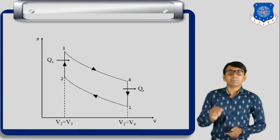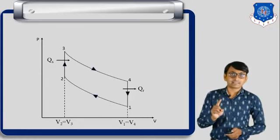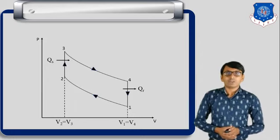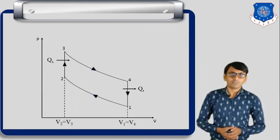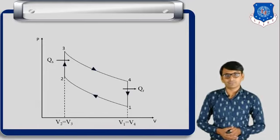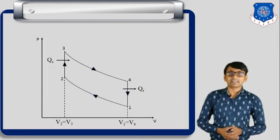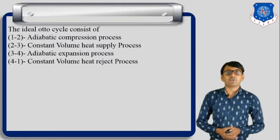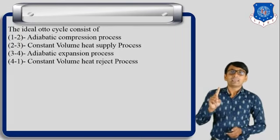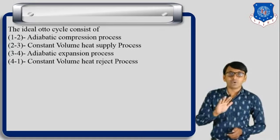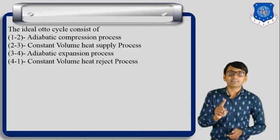This is the PV diagram of the Otto cycle. It consists of four processes: 1-2, 2-3, 3-4, and 4-1. During process 2-3, volume remains constant — V2 is equal to V3, as shown in the PV diagram. During process 4-1, V1 is equal to V4. Qs is heat supply and Qr is heat rejected. Process 1-2 is adiabatic compression; during this process there is no heat transfer and volume of air decreases.